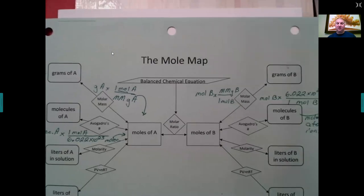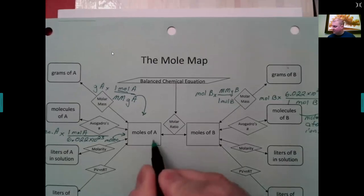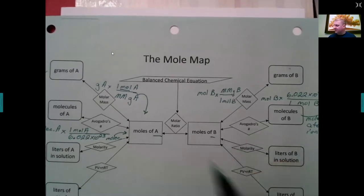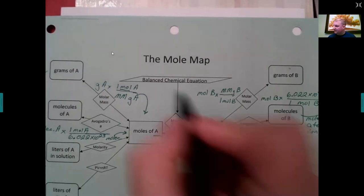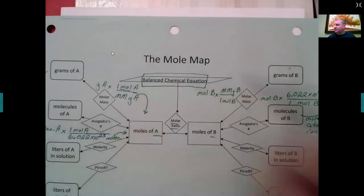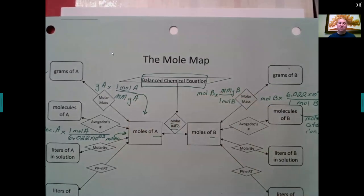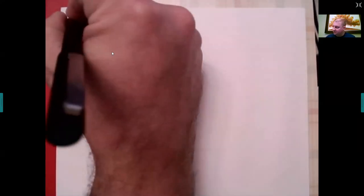The mole map doesn't make much sense without reactions to use. The key feature in the middle of the mole map is that to go between moles of A and moles of B, you must use the molar ratio from a balanced chemical equation. So our starting point for any stoichiometry question is always a balanced chemical equation. Let's take a look at two reactions.